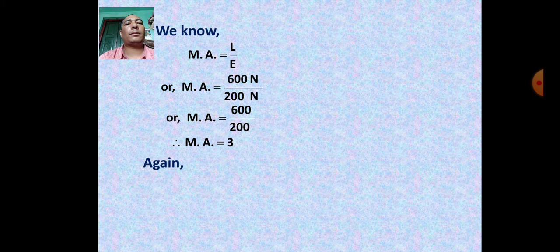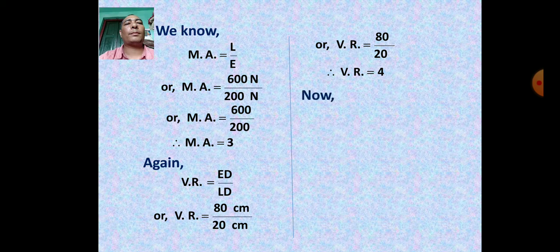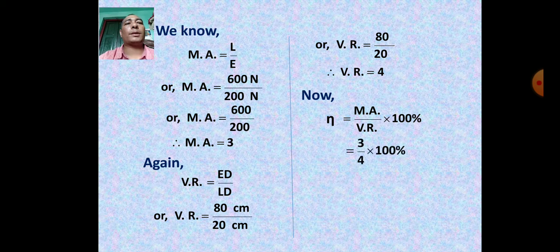Continuing Numerical 3: Efficiency η = (MA / VR) × 100% = (3 / 4) × 100% = 75%.